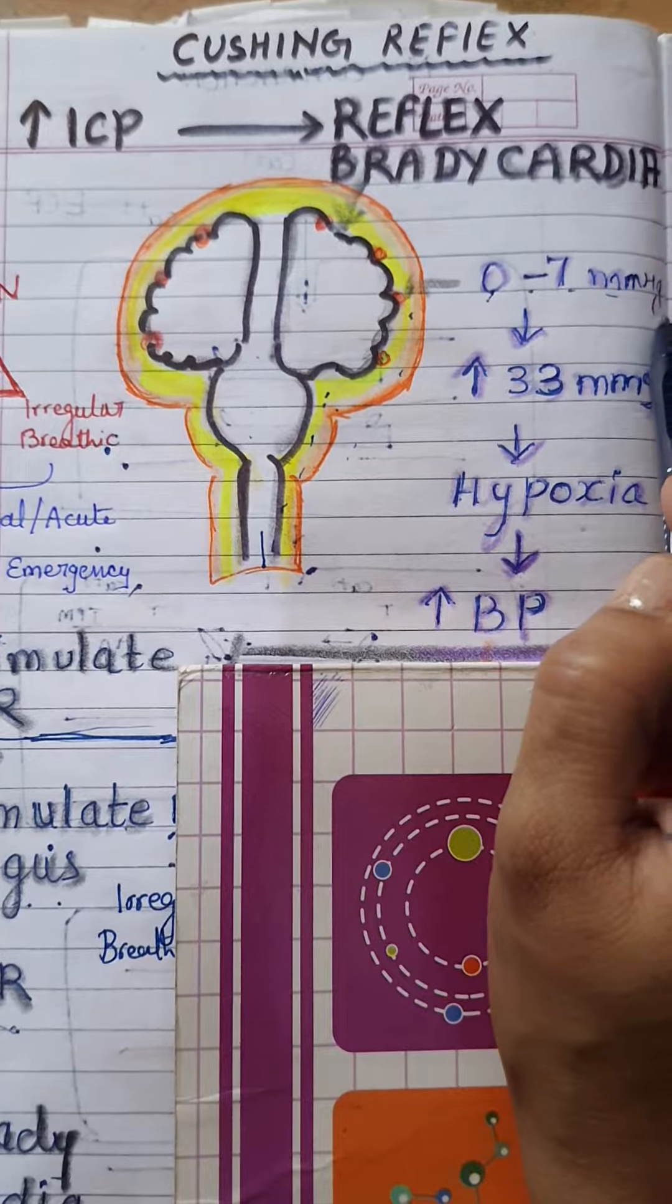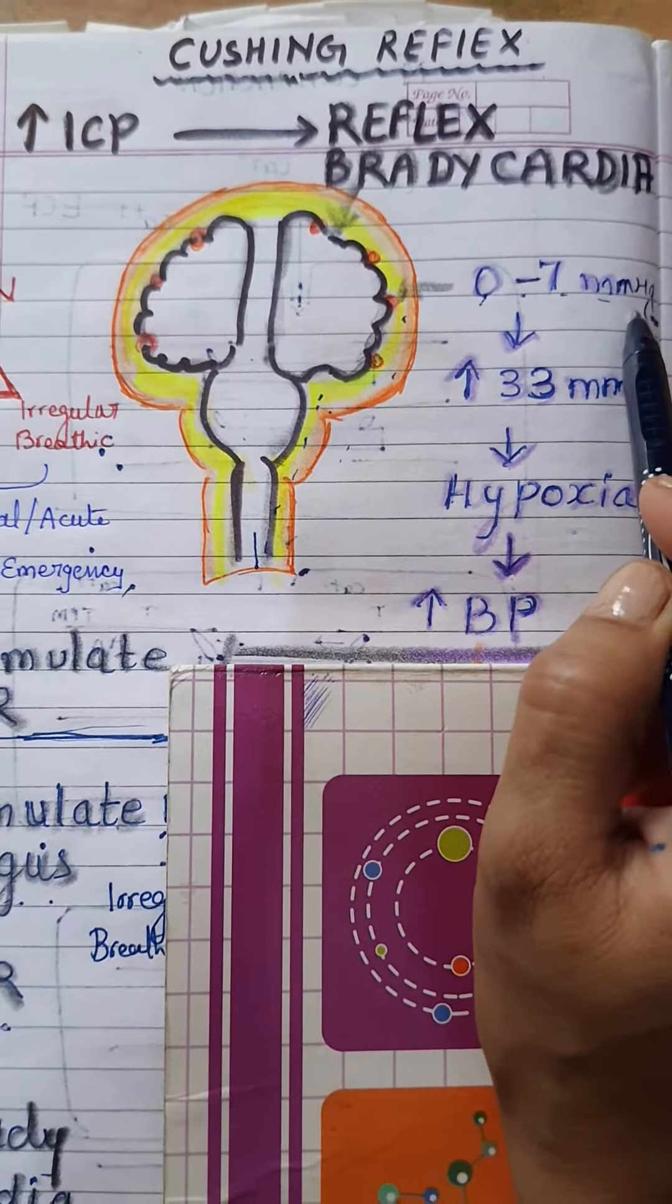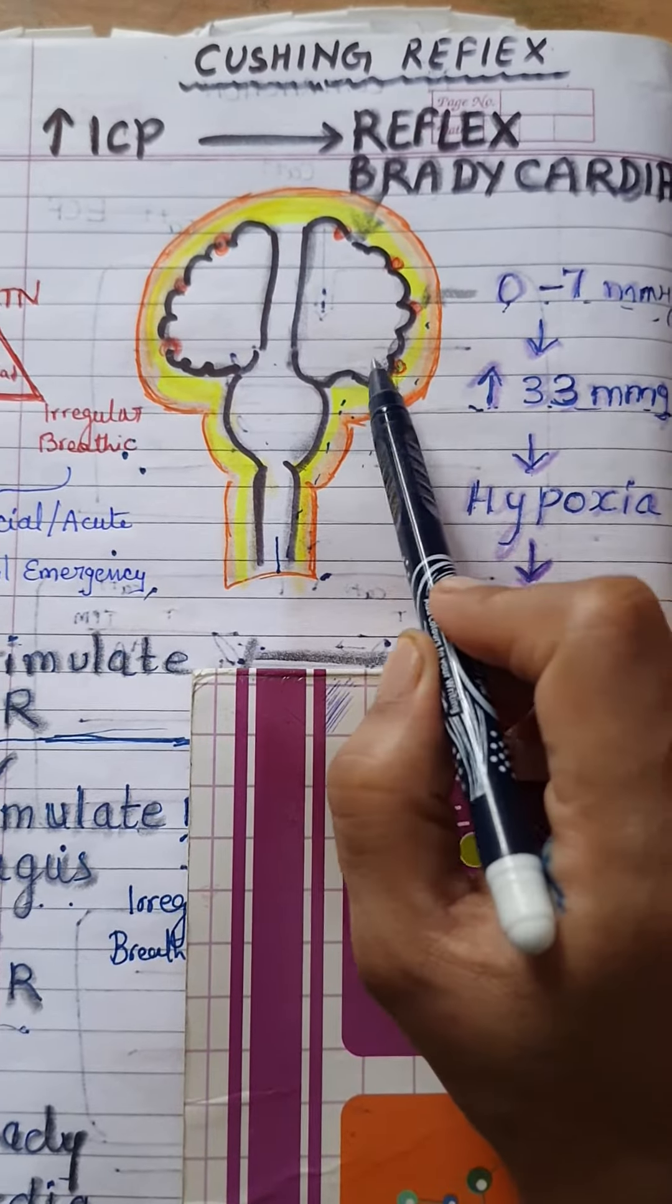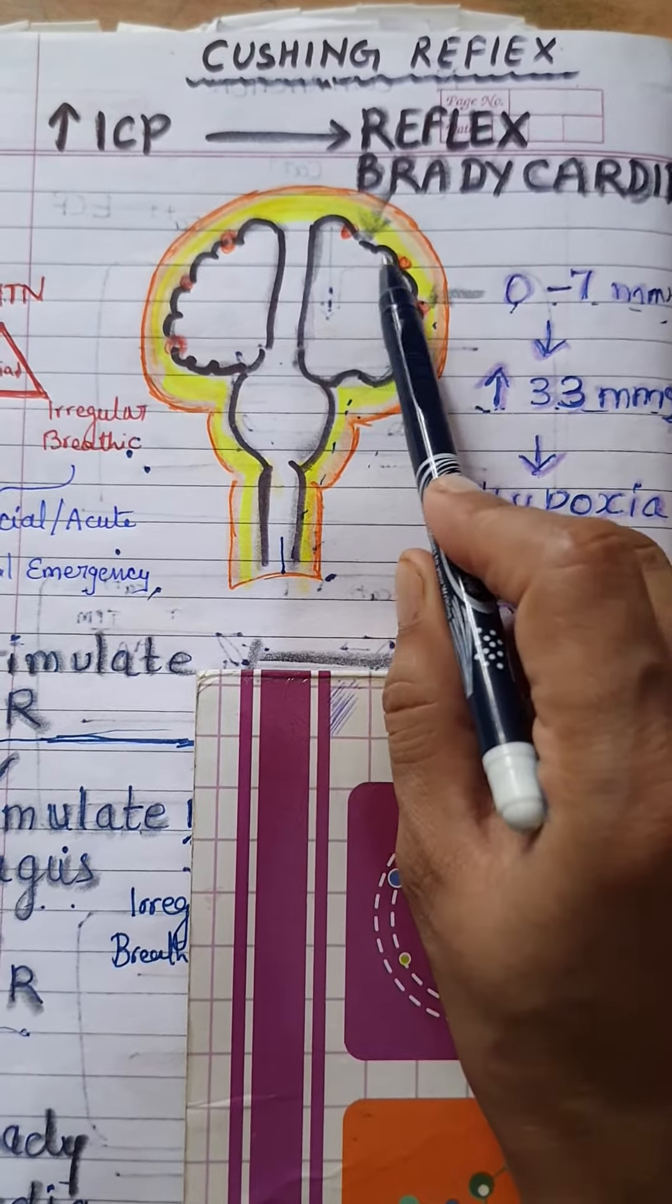Because of certain pathological conditions, when this pressure raises for more than 33 mm of Hg, it creates pressure over the blood vessels that are present here.